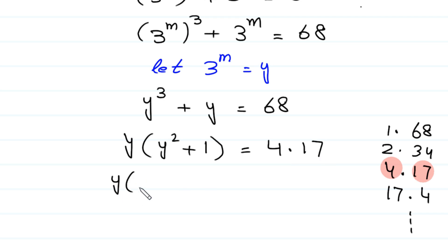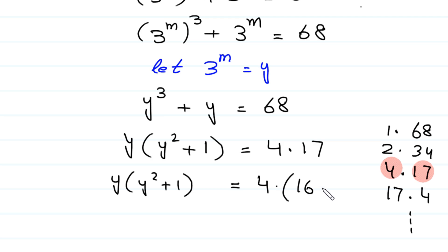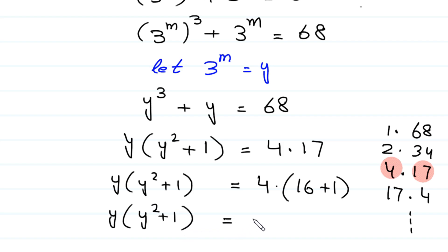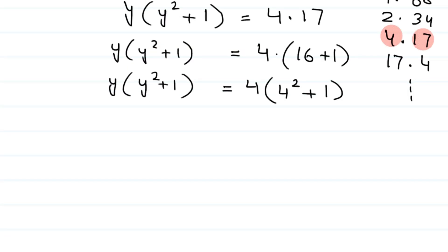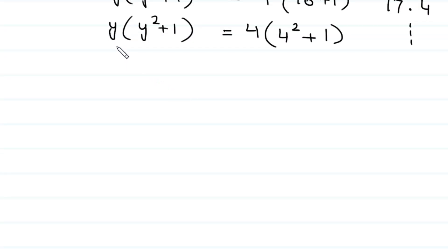Next, y times (y squared plus 1) is equal to 4 times (4 squared plus 1), since 16 can be written as 4 squared. Now, on the left side we have y times (y squared plus 1) and on the right side 4 times (4 squared plus 1). So it is obvious that y is equal to 4.